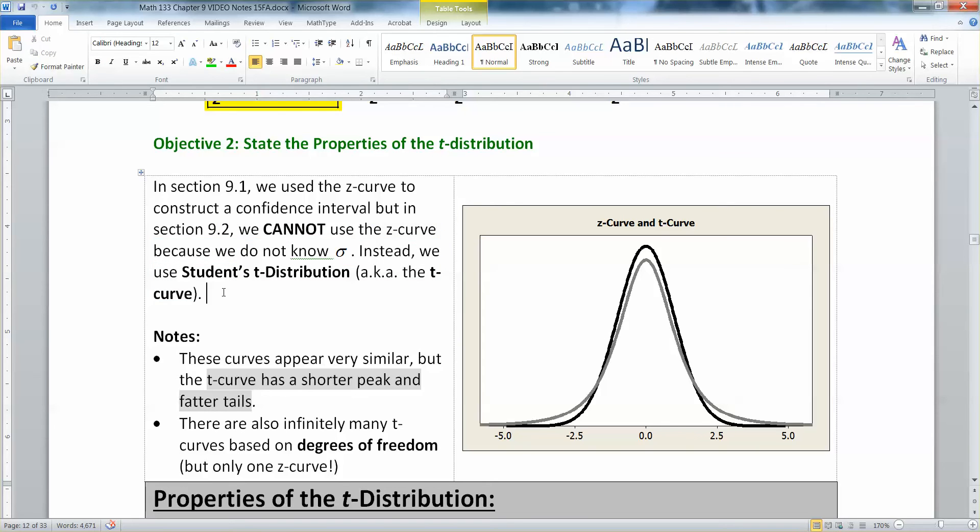Student, by the way, was the code name for the person that published this work. He was working for Guinness Brewing Company, the same company that's in Ireland that makes stout. He didn't want to publish it under his real name because he didn't want to get fired, as it was considered trade secrets by Guinness Brewing Company. So he published under the name student to hide who he was.